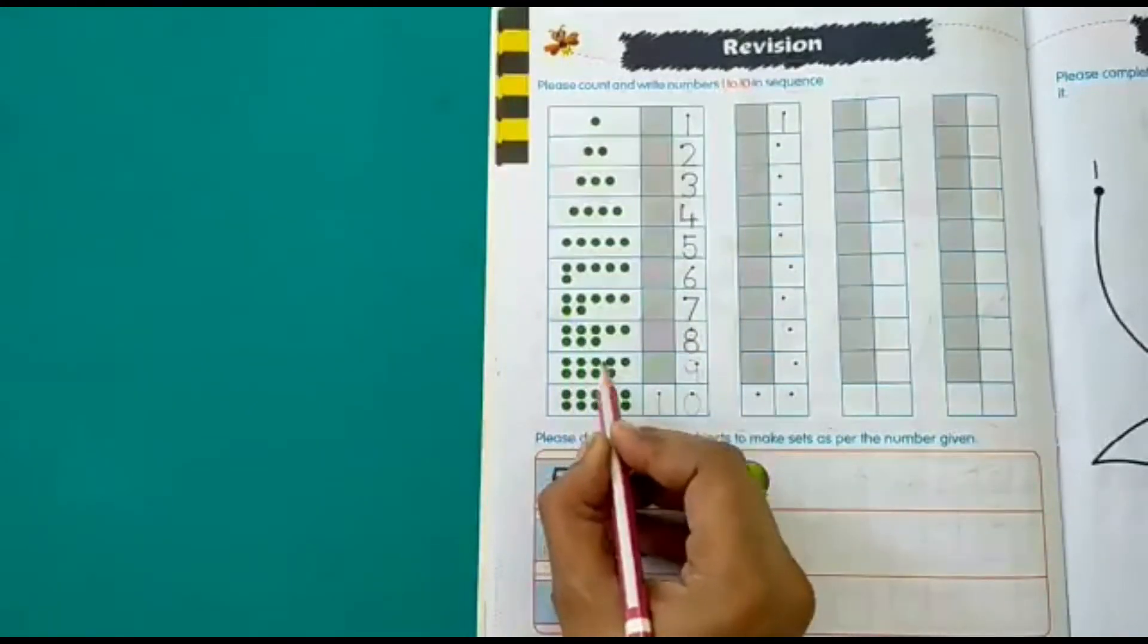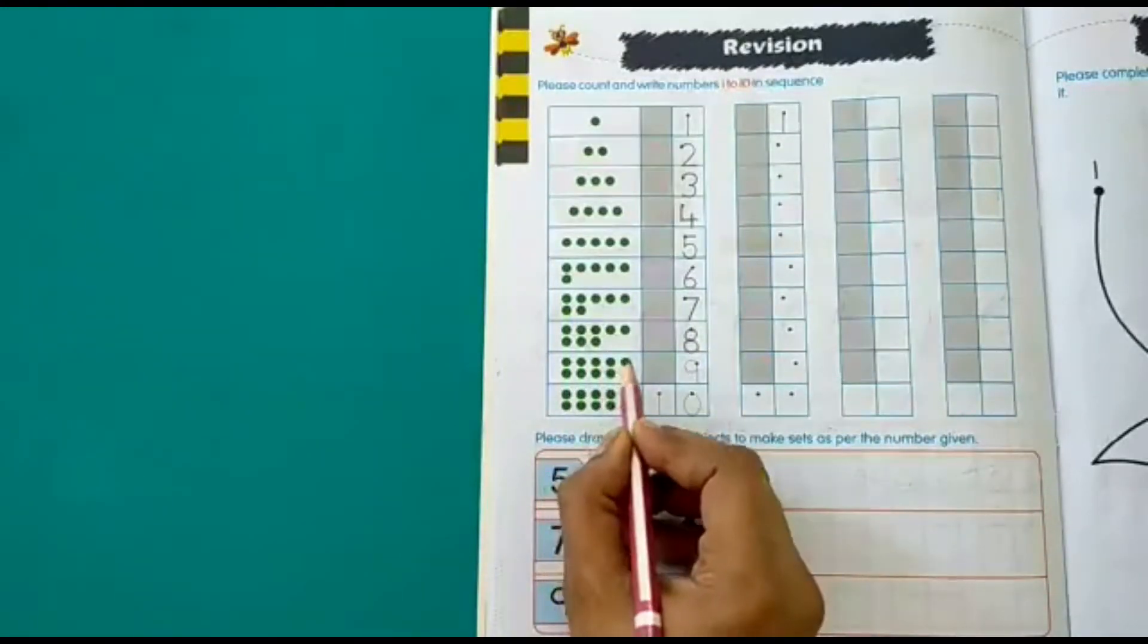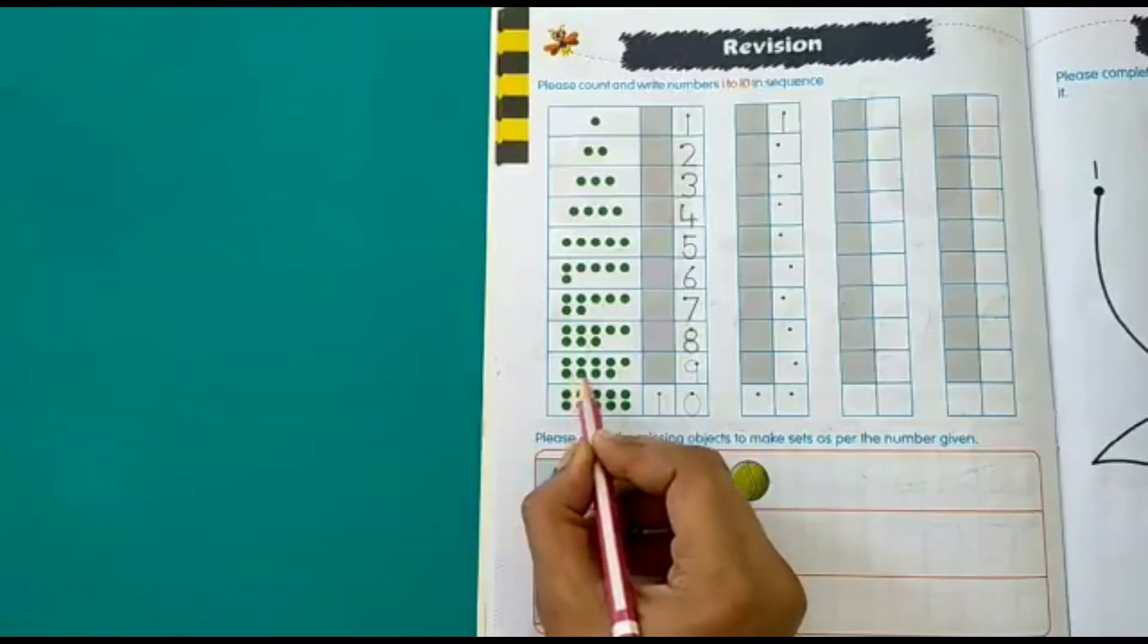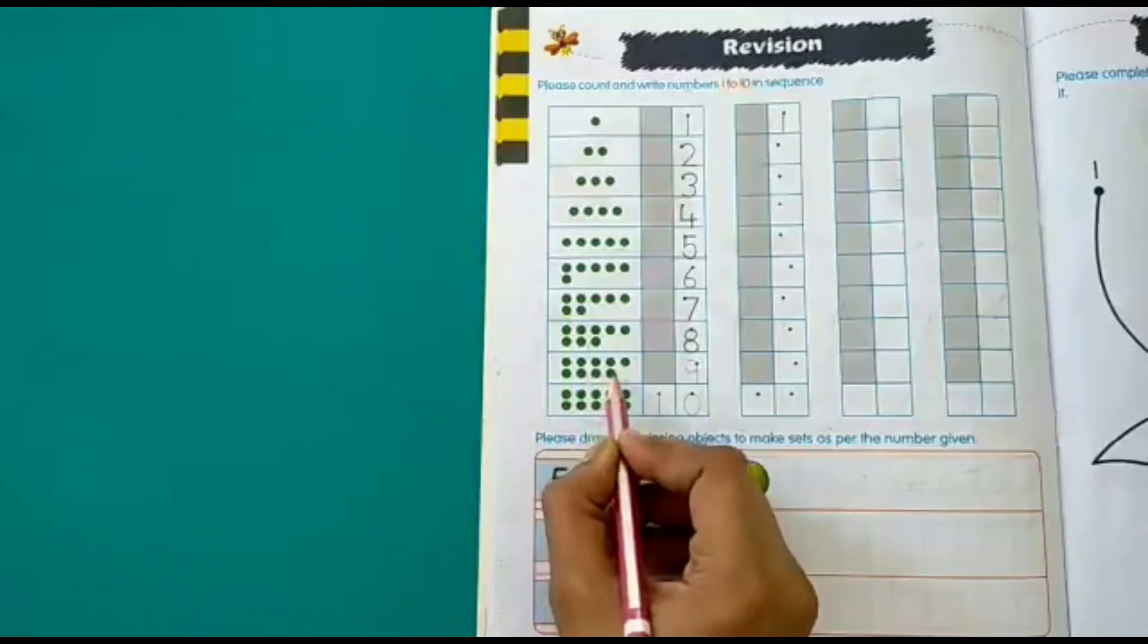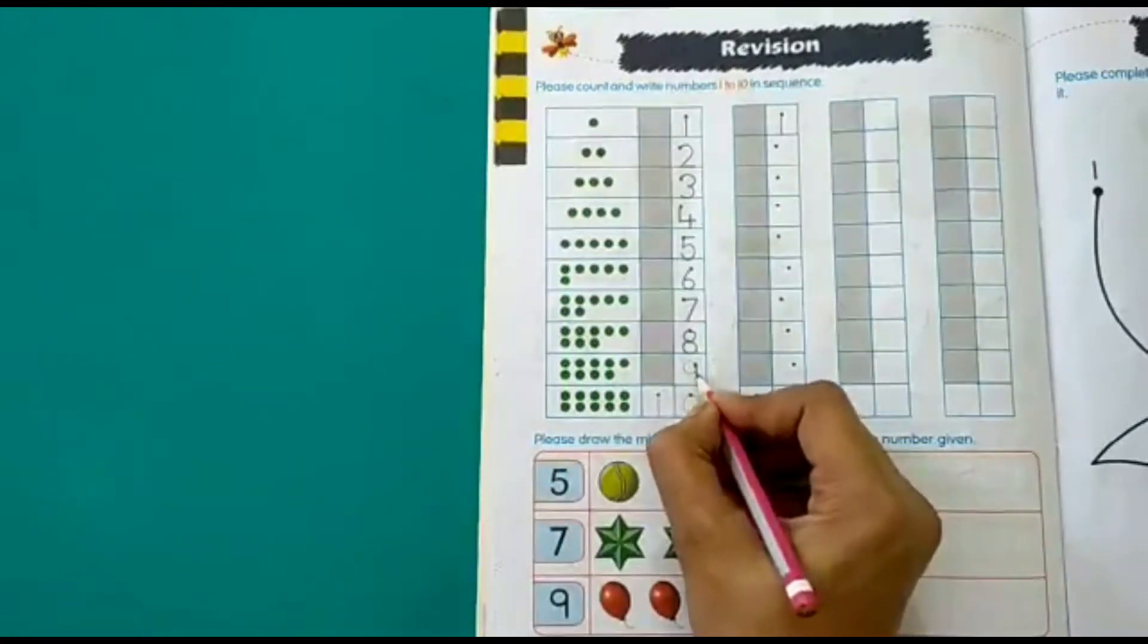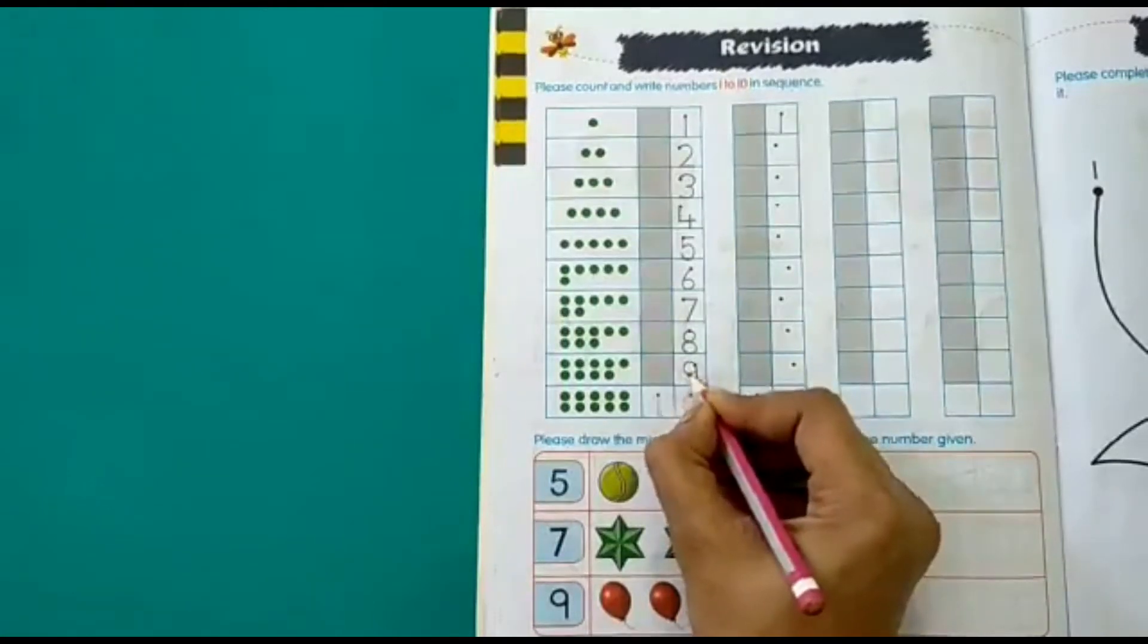1, 2, 3, 4, 5, 6, 7, 8, 9. So let's write 9.